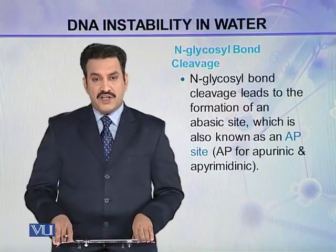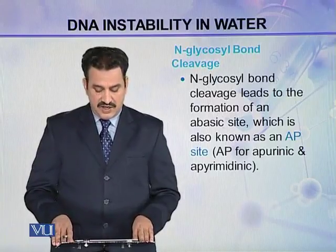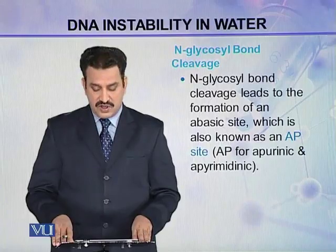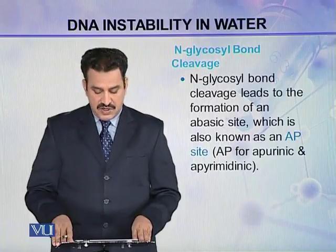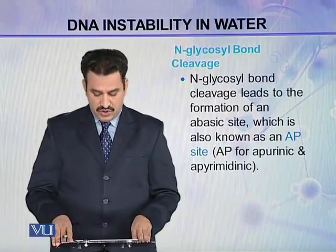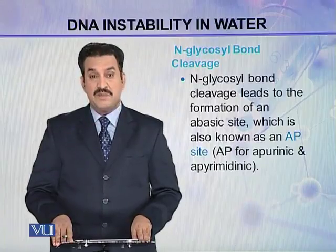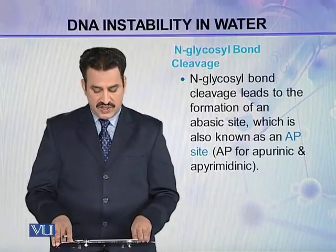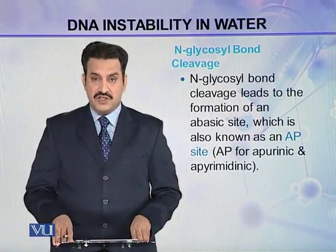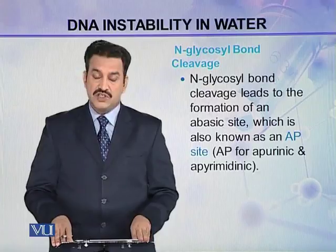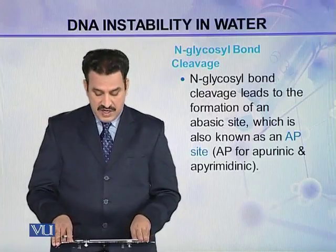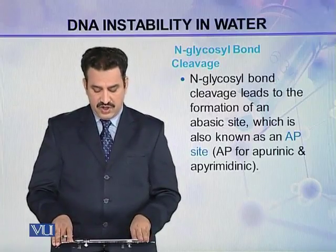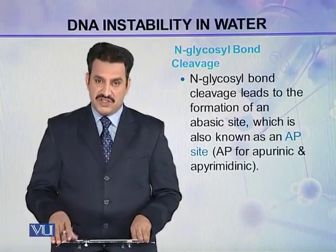The second type of bond is the N-glycosyl bond. N-glycosyl bond cleavage leads to the formation of an abasic site, also known as an AP site. AP stands for apurinic or apyrimidinic.